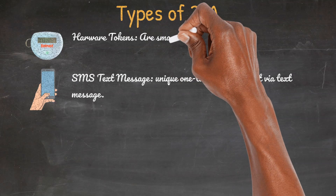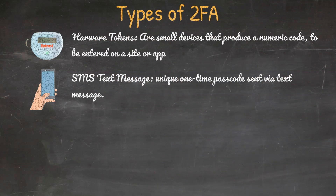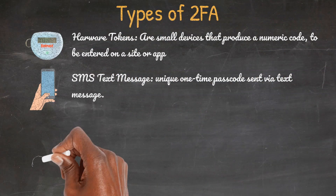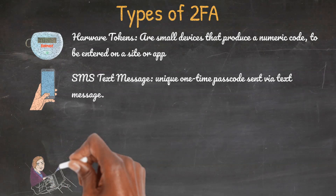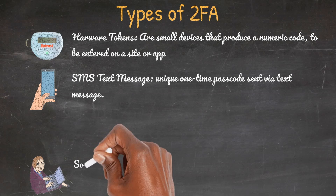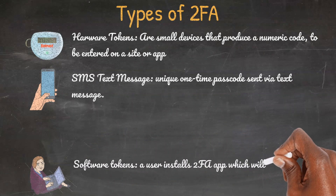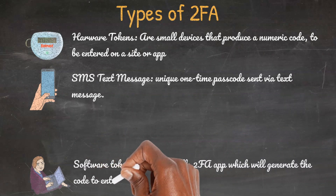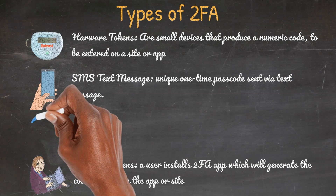When a user tries to access an account using a hardware token, they use the token to generate a numeric code and enter that 2FA code back into the site or app. Software tokens: a user is first required to install a free 2FA app on their device of choice. When the user tries to access an account with their email and password combination, they are then prompted to enter the code displayed on the 2FA app.